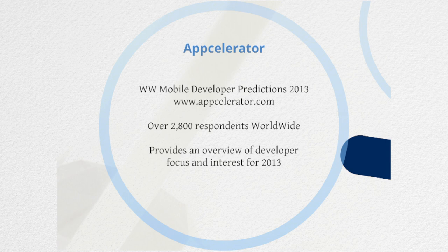I wanted to mention AppCelerator today. AppCelerator is an organization that IDC works with to do two surveys every year with global developers worldwide. We survey almost 3,000 developers around the world to understand their intentions with respect to development in the next 12 months. We recently posted that survey online — it's absolutely free — at www.appcelerator.com, and it provides a couple of indications that I'm sharing here with you today.